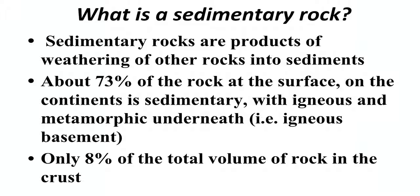So what are sedimentary rocks? They're rocks formed from sediments. Sediments are small pieces of other rocks — when rocks undergo weathering, which means they're broken down, those rocks form sediments. If we take those sediments and put them back together, we form a sedimentary rock. Only eight percent of all the rocks on Earth are sedimentary rocks, which is small, but 73 percent of all rocks found on the continents are sedimentary rocks, right at the surface.